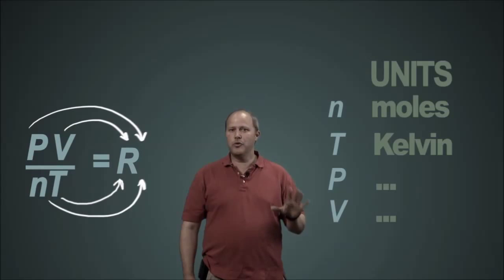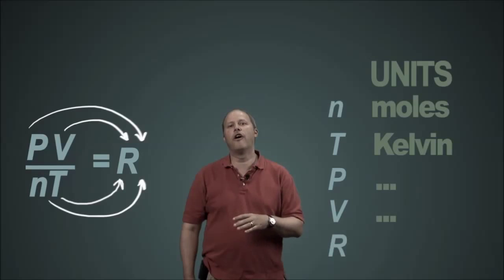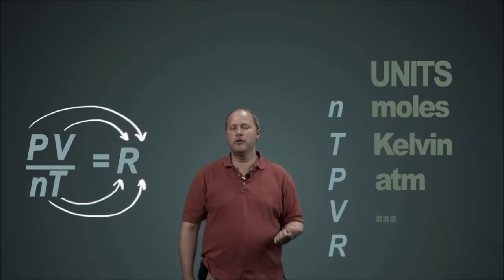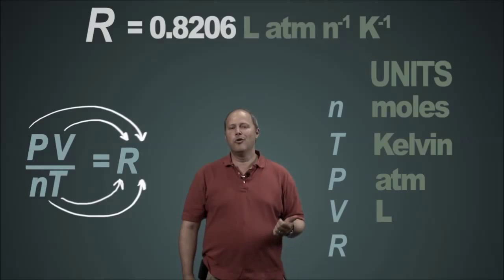And so depending upon what choice of units you have in the problem, you're going to have to pick the correct units for R. So for example, if you had pressure in atmospheres and volumes in liters, it'd be 0.08206 liter atmospheres per mole per Kelvin.